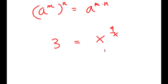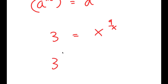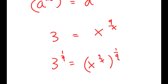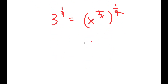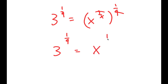Now I'm going to take the power of 1 over 9 on both sides. These two are going to cancel out and I'm left with 3 to the power of 1 over 9 is equal to x to the power of 1 over x.